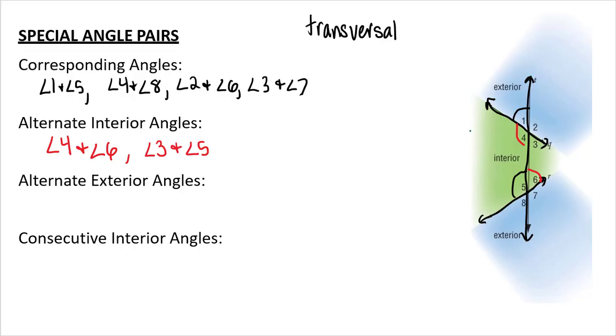Alternate exterior angles. So same thing, just now on the exterior. So angle one and angle seven. Angle two and angle eight.